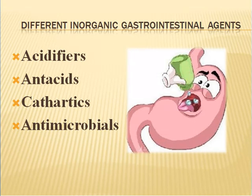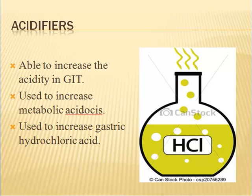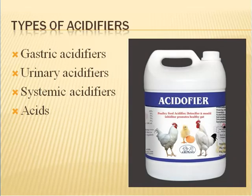What are the different inorganic gastrointestinal agents? There are four types: first, acidifiers; then antacids; then cathartics; and antimicrobials. Acidifiers are drugs which are able to increase the acidity in the gastrointestinal tract. Some of these drugs are used to increase metabolic acidosis, and some are used to increase gastric hydrochloric acid. There are four types of acidifiers: gastric acidifiers, urinary acidifiers, systemic acidifiers, and acids used as pharmaceutical aids.